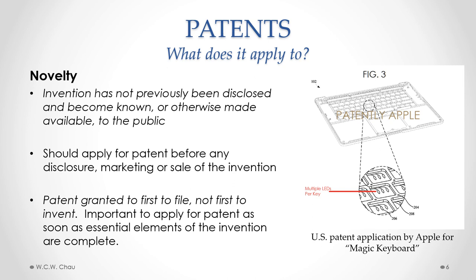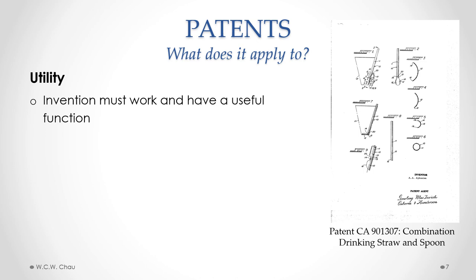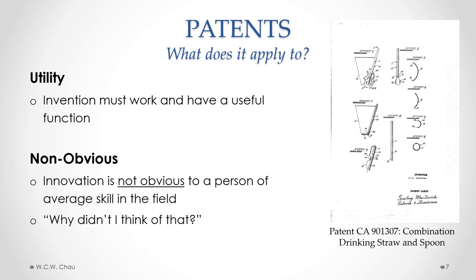The picture here shows the U.S. patent application by Apple for something called a Magic Keyboard. The third requirement for patentability is utility, which means that an invention must both work and have a useful function. The fourth requirement is non-obvious, meaning the innovation is not obvious to a person of average skill in the field. An example is this combination drinking straw and spoon, for which a patent was granted in Canada, accepted as a non-obvious innovation.